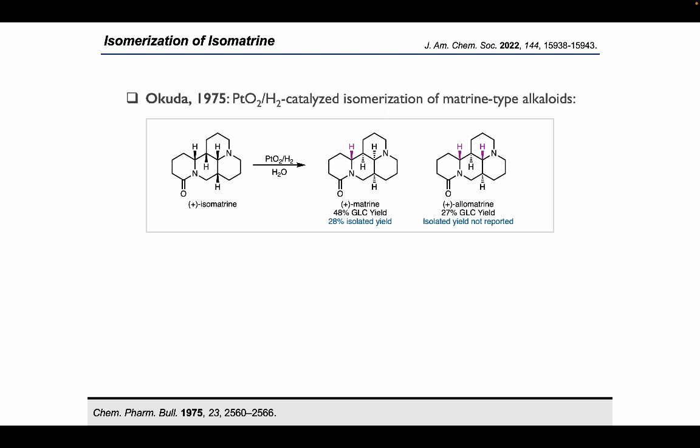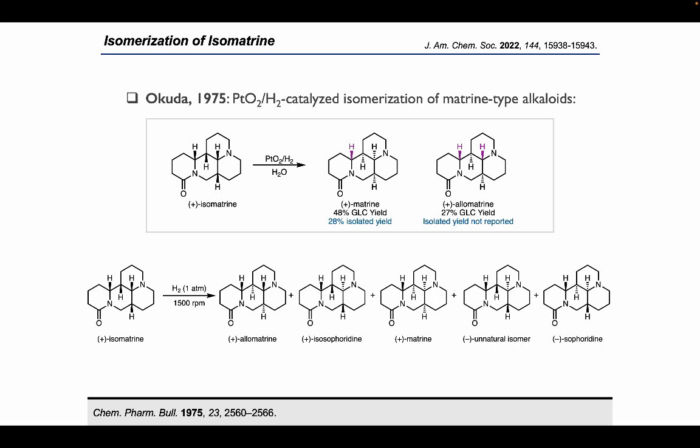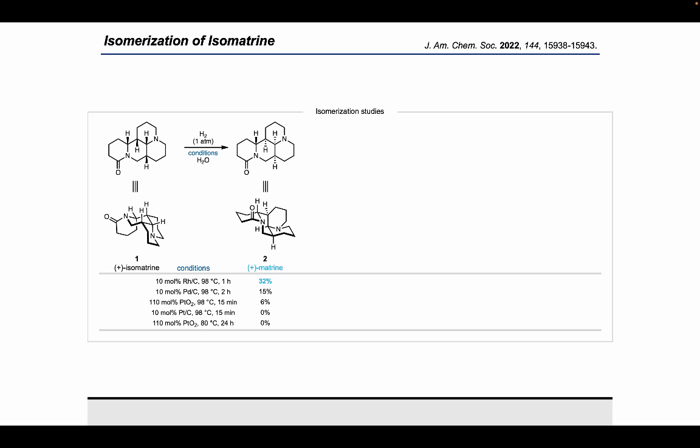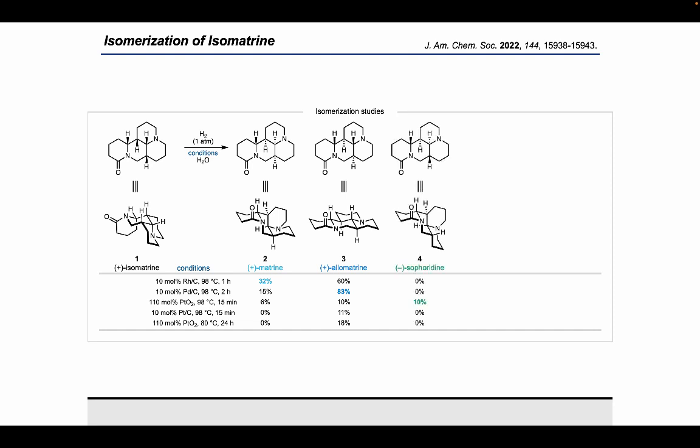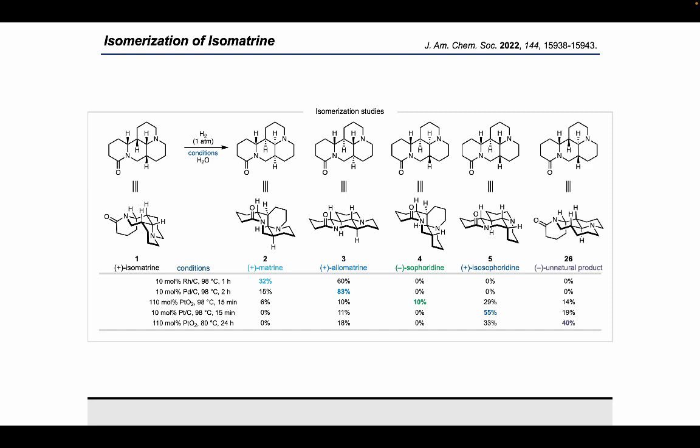In the isolation of isometrine, it was shown that it can be isomerized into both matrine and allometrine. When we tried to reproduce these conditions, we actually got more natural products than the original authors found, which we took as a bit of a blessing in disguise and decided to try and optimize these conditions to access each of these natural products. Initially, we found that using rhodium on carbon gave access to matrine as the major component from this isomerization reaction. Palladium on carbon gave us access to allometrine in an 83% yield, whilst Adam's catalyst allowed us to access sephordine for the first time in a 10% yield. Platinum on carbon allowed us to access isosephordine in a 55% yield. And if we used Adam's catalyst at a reduced temperature for a longer period of time, we isolated a diastereomer, which has not been shown to be a natural product to date.